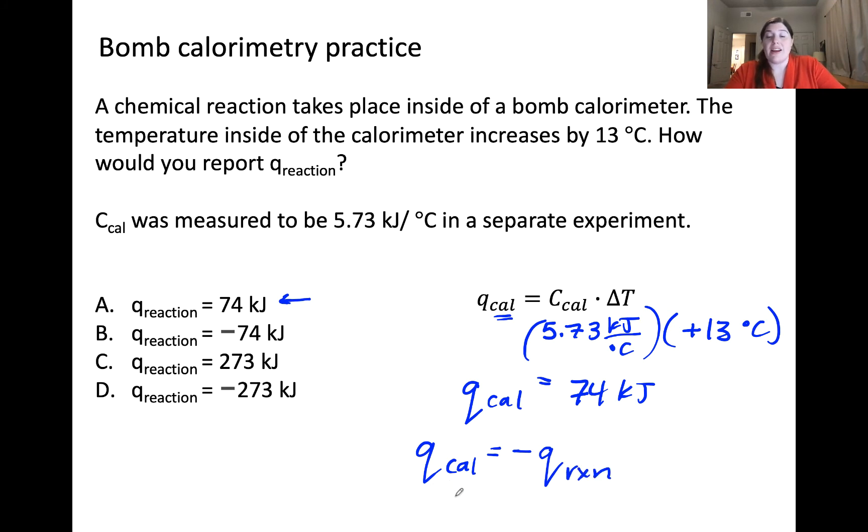So to find Q of reaction here, we need to take Q of calorimeter and change the sign. Q of reaction, therefore, is negative 74 kilojoules. That is answer choice B.